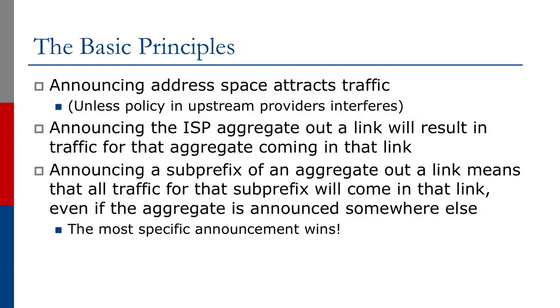We're going to now carry on our look at the basic principles of multi-homing. The first one we want to think about is this: announcing address space attracts traffic. We learned that at the start of this series. Of course, unless policy and upstream providers interfere with this, but basically announcing address space will attract traffic. Announcing the ISP aggregate on a link will result in traffic for that aggregate coming in that link. Announcing a sub-prefix of an aggregate on a link means that all traffic for that sub-prefix will come in that link, even if the aggregate has been announced on some other path.